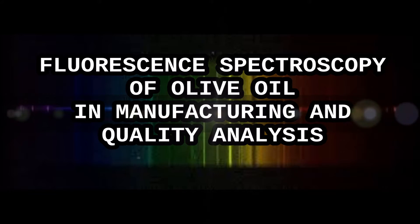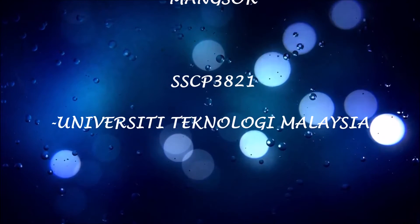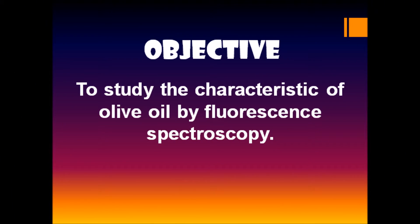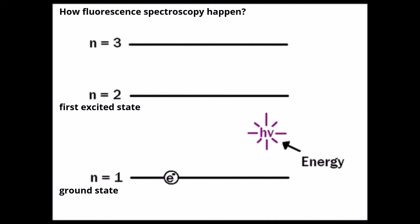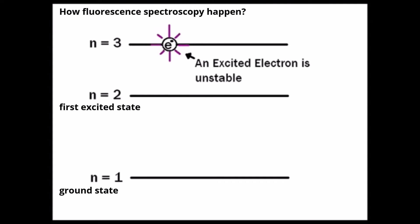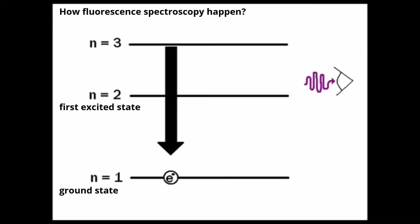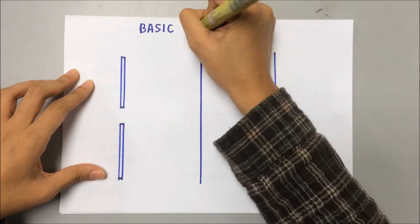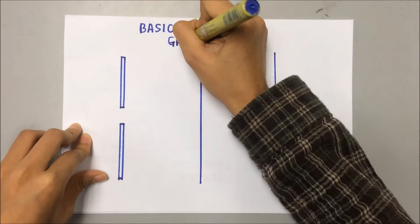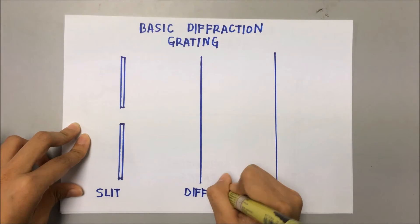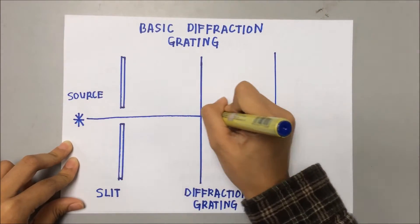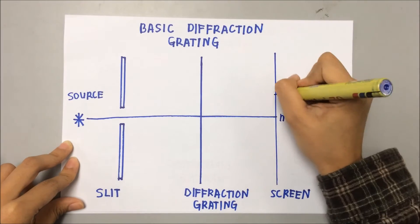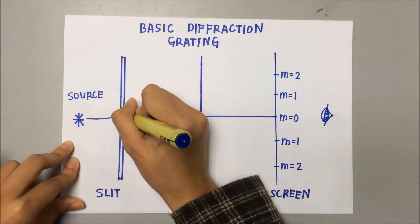Thank you for joining us. A diffraction grating is an optical device used to separate the different wavelengths or colors contained in a beam of light. The device usually consists of thousands of narrow, closely spaced parallel slits. When a narrow beam of white light is directed at a diffraction grating along its axis, a set of colored spectra are observed on both sides of the central white band.